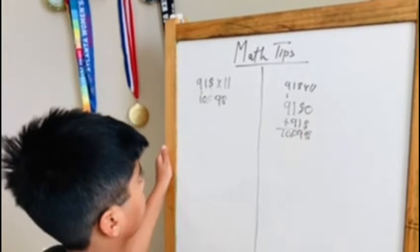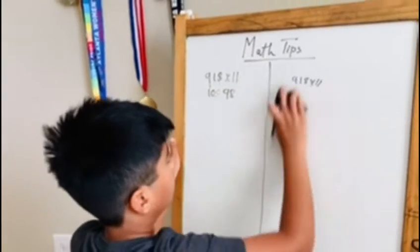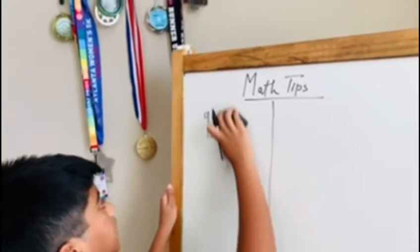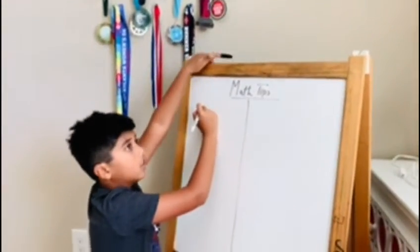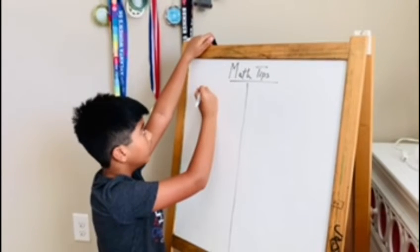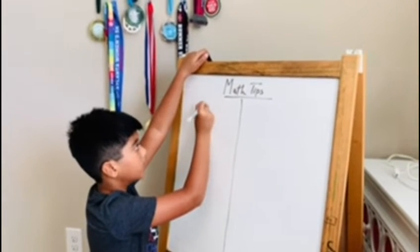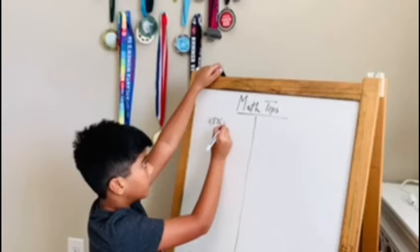10,090. So we did the three-digit number, now we can go into a four-digit number. I'll do 9876 times 11.